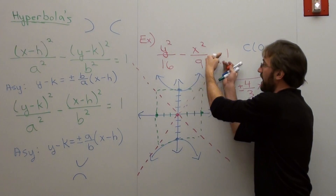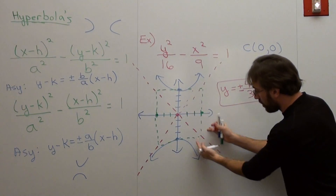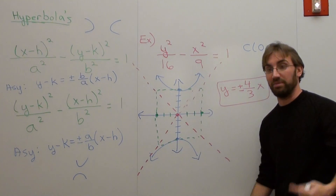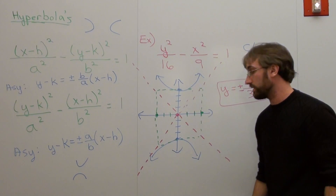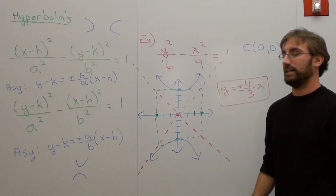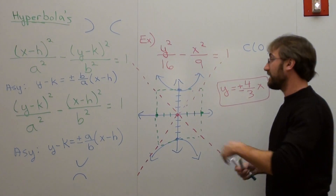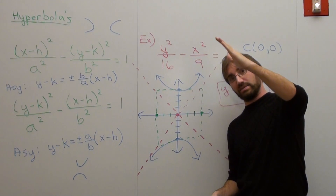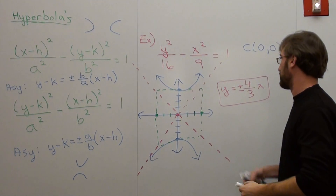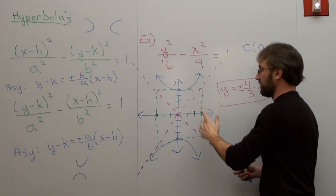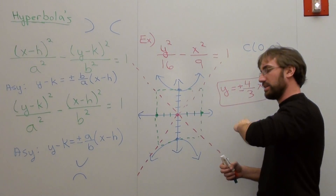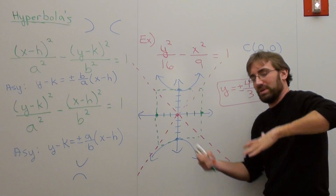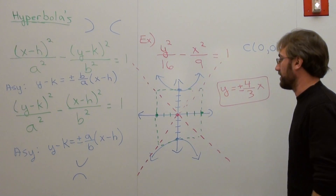These are called slant asymptotes. You have horizontal asymptotes, vertical asymptotes, and then asymptotes at a slant. By definition it's just a linear equation — it doesn't have to be y equals x, just some coefficient in front of x. That's really all there is to it.